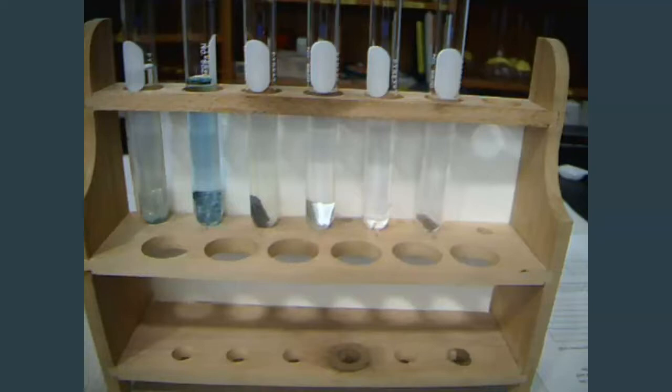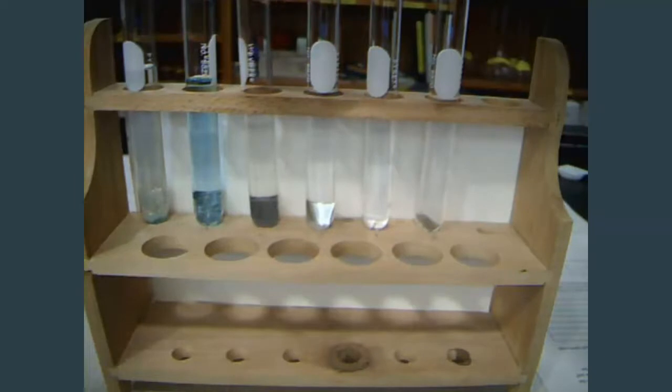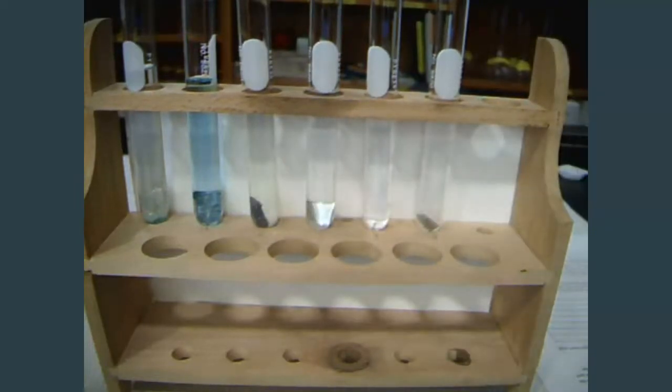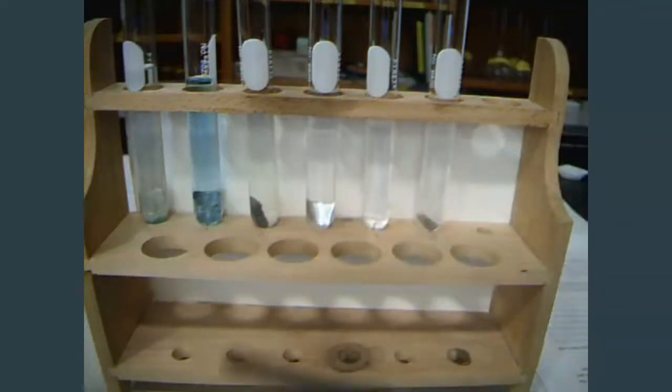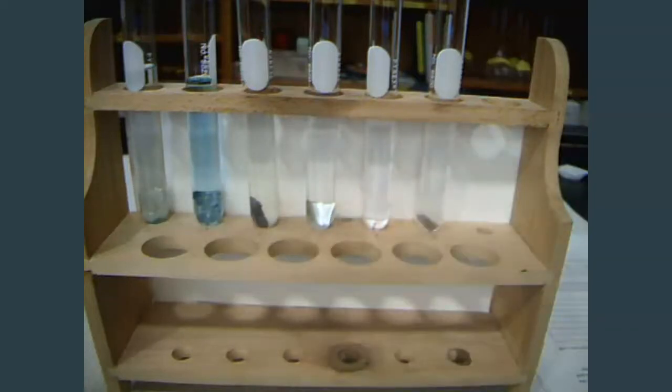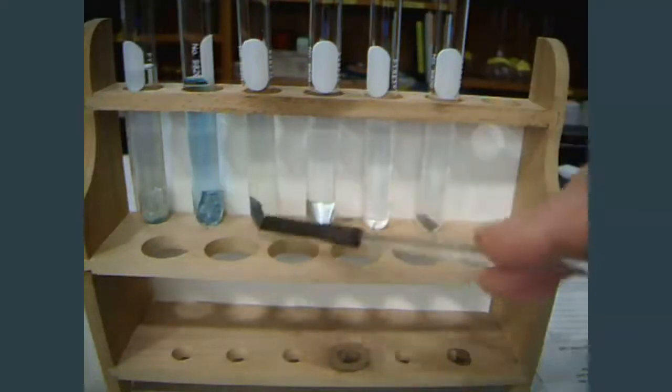Same thing in number three with the zinc and the lead nitrate. We can see all of these crystals growing onto the lead. So it looks like we definitely have a reaction in test tube one, in test tube two, in test tube three. We have a color change. In addition to the color change, we also have these crystals growing on there, a precipitate being formed.